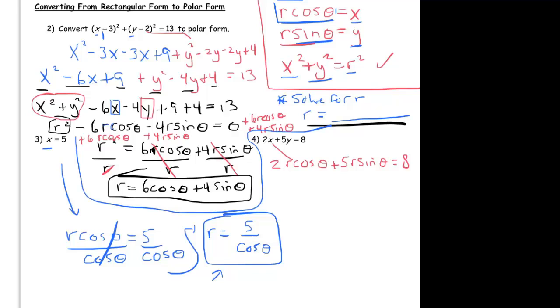And now I just want to solve for r. So the way to do that here I think would be to factor an r out. I have an r in both of these terms, I'm just going to factor it out, and I'm left with 2 cosine theta plus 5 sine theta equal to 8.